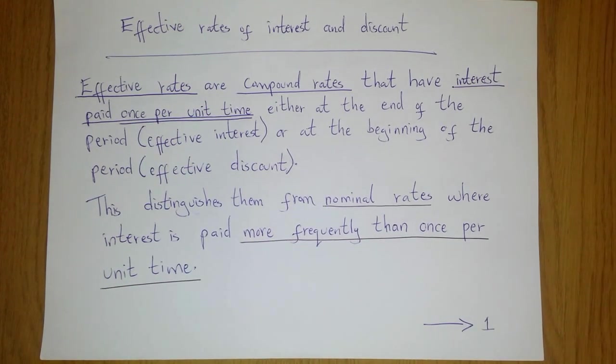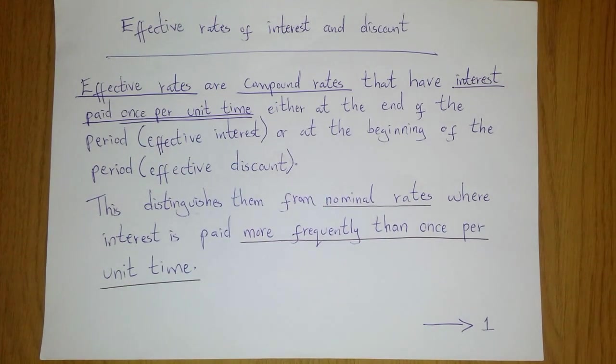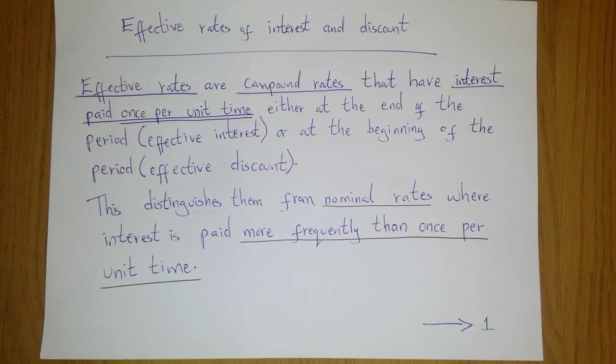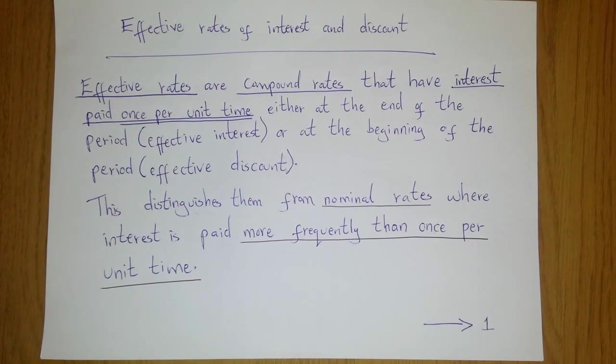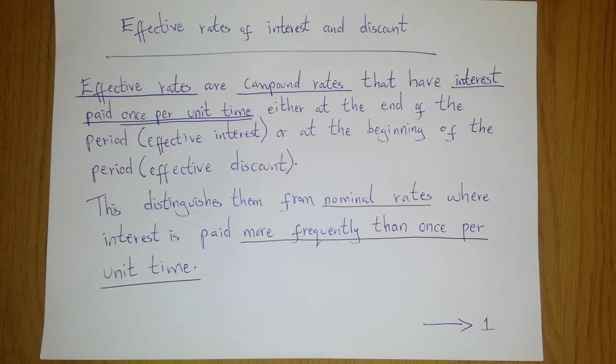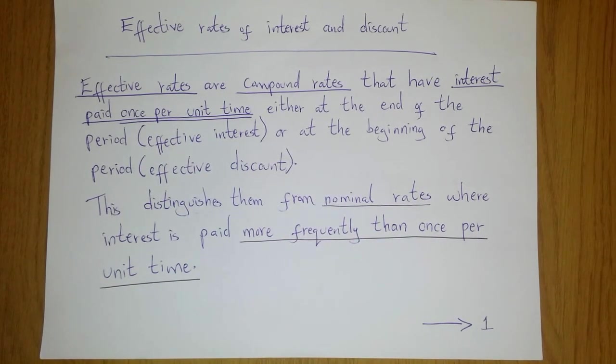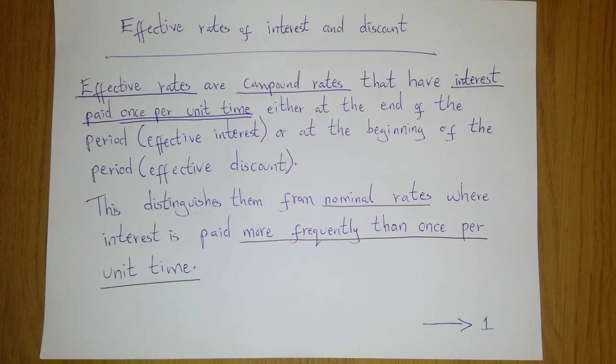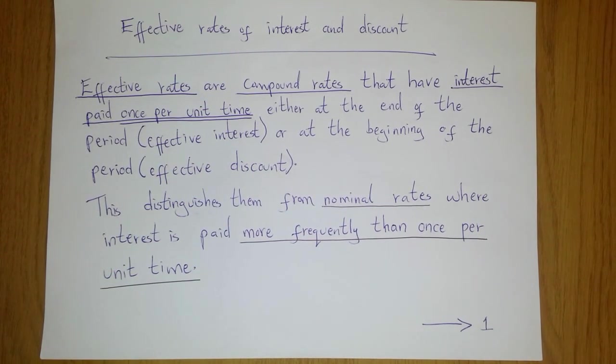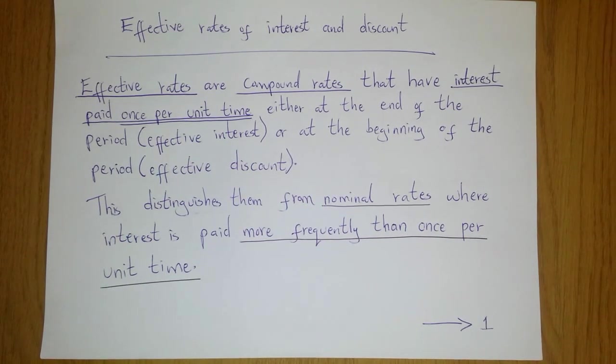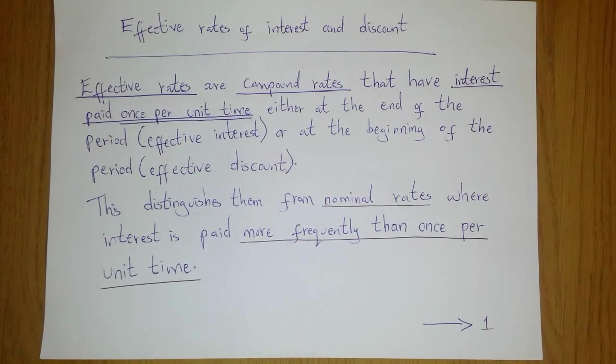Effective rates of interest and discount. Well, effective rates are simply compound rates that have interest paid once per unit time either at the beginning of the period or at the end of the period. When the interest is paid at the end of the period it is called effective interest, and if it is paid at the beginning of the period it is called effective discount.